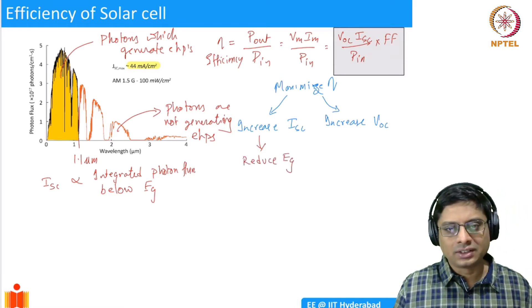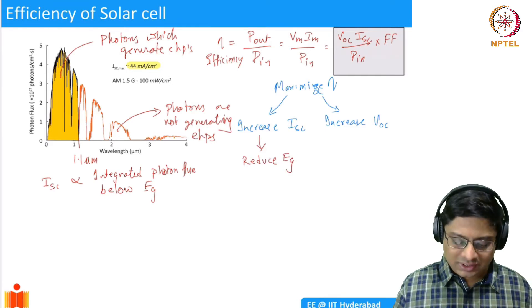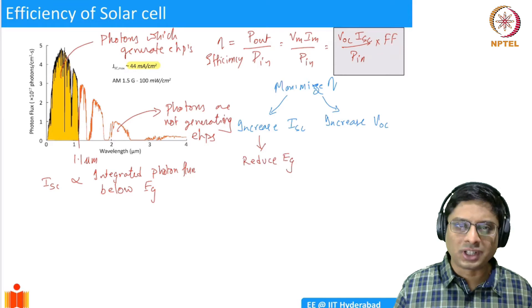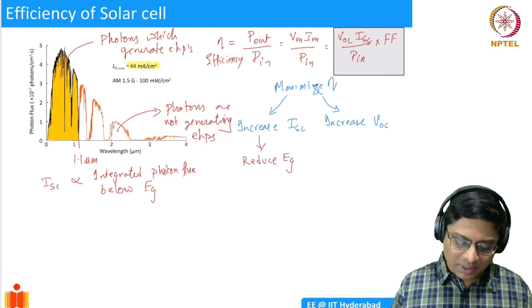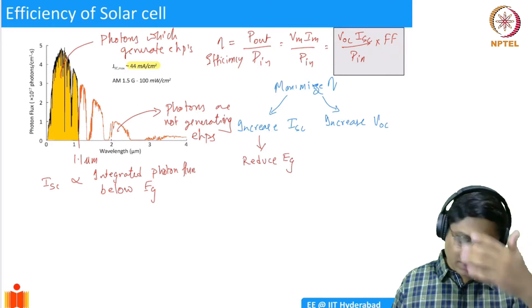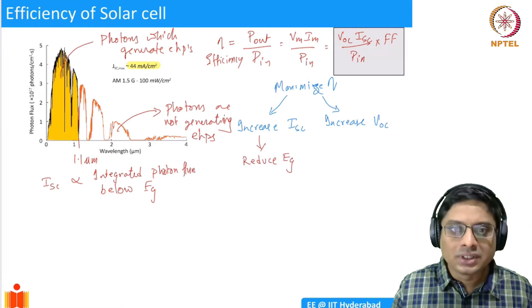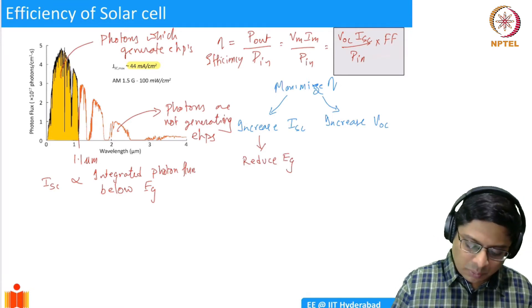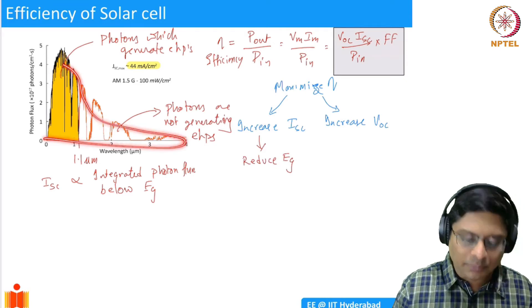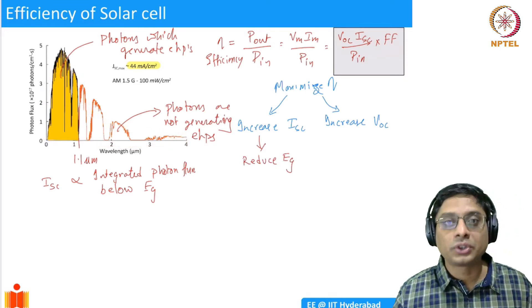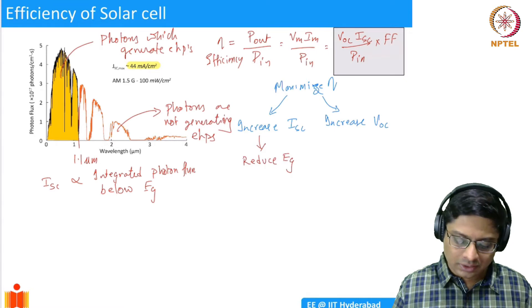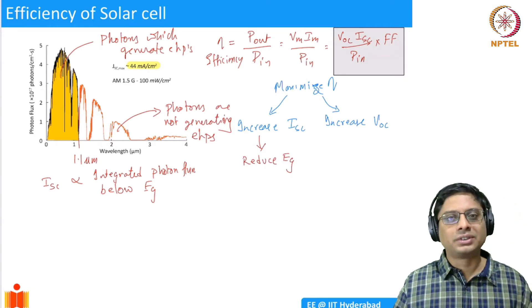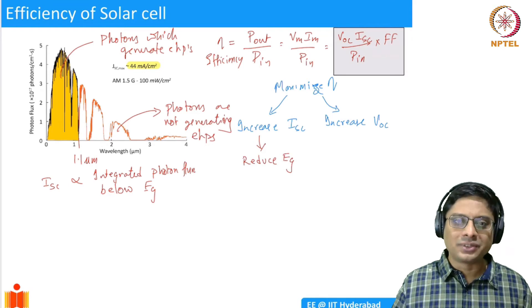If we reduce Eg — say to about 0.2 eV — the corresponding wavelength cutoff extends out to around 6 microns, meaning essentially the entire solar spectrum would be absorbed, giving us much more short circuit current.